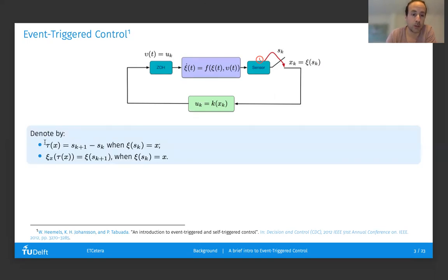I will denote the inter-sample time generated from a given state x by a periodic event-triggered condition by tau of x, and the next sample after such inter-sample time starting from that point x will be denoted by psi sub x of tau of x.